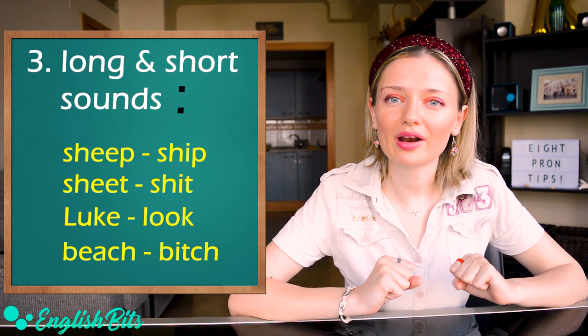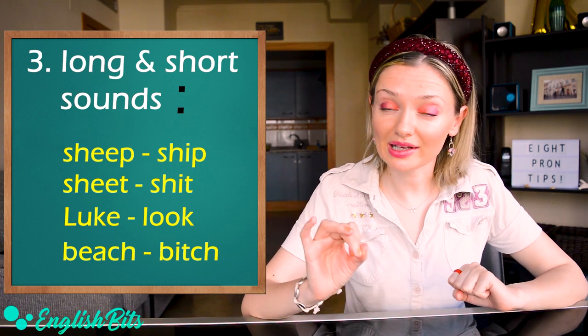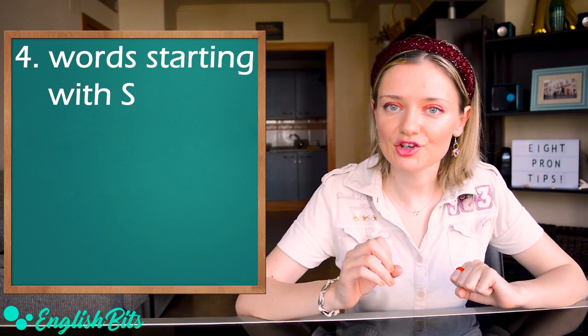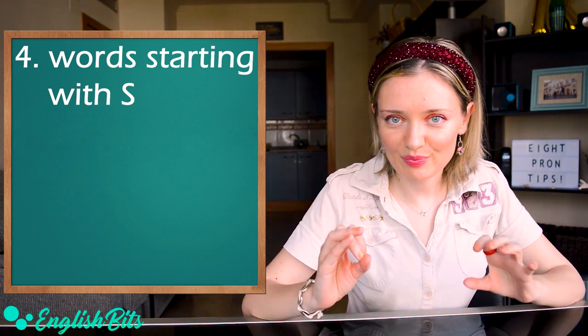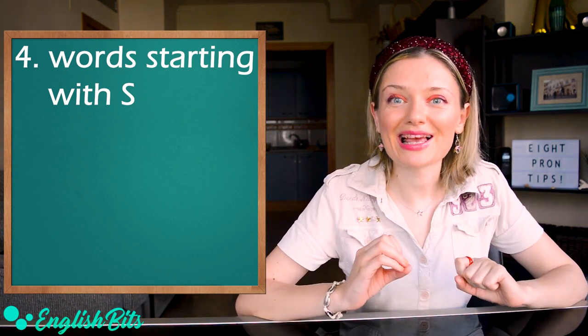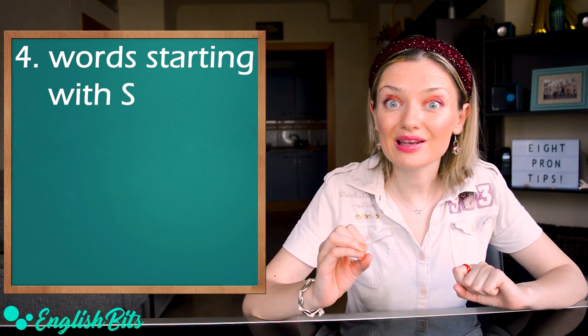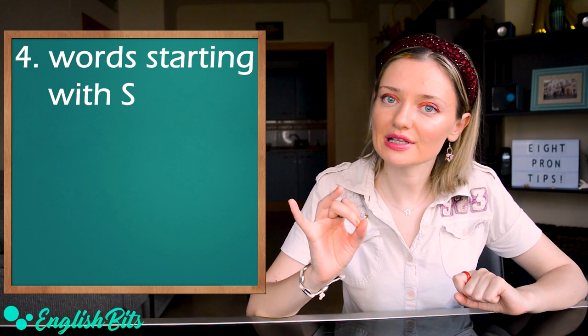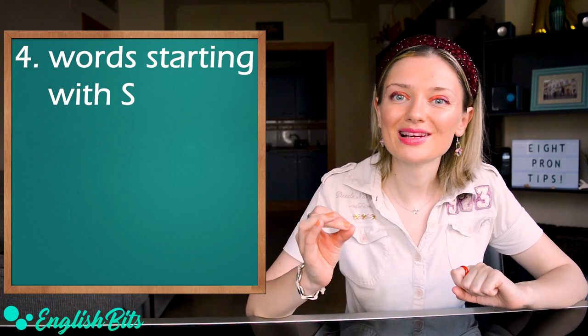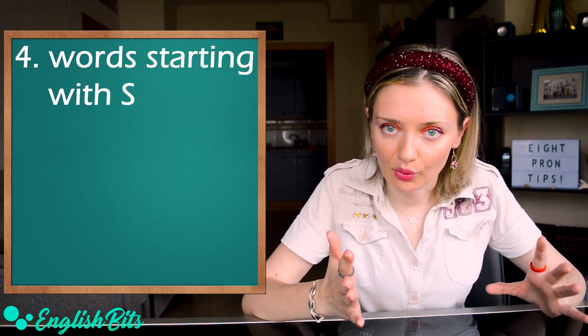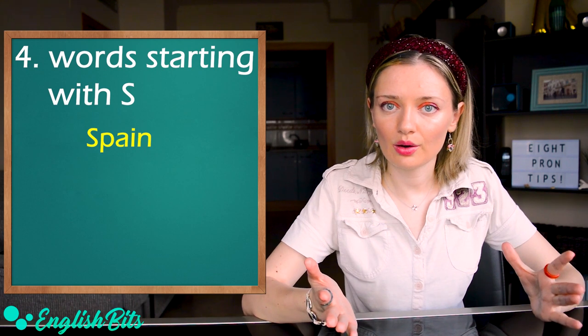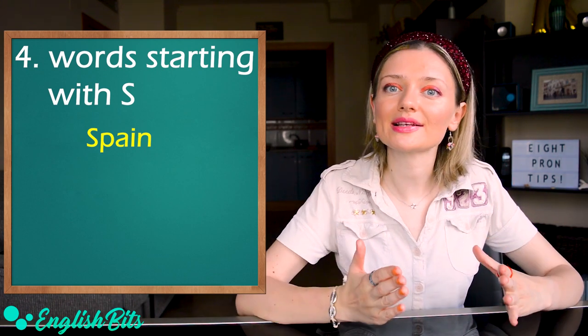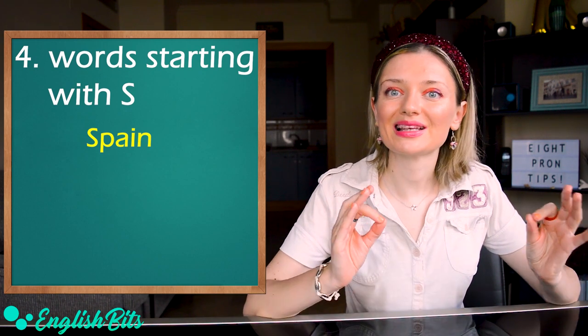My tip number four is to pronounce correctly words that start with the letter S. So Spanish speakers tend to pronounce these words saying S as the first sound, when it has to be S. For example, Spain. We say Spain, not Spain. We don't add the sound E. Spain.